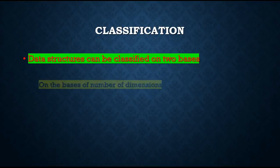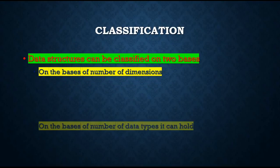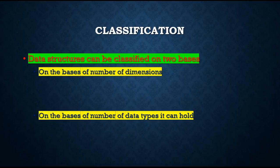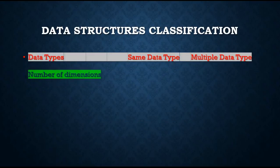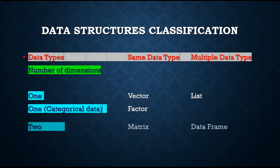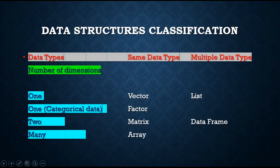These six types of data structures can be further classified on two bases: on the basis of number of dimensions, as well as on the basis of number of data types they can hold. You can put these two classifications in a single table. The columns are same data type and multiple data type, and the rows are one-dimensional, one-dimensional with categorical data, two dimensions, and many dimensions.